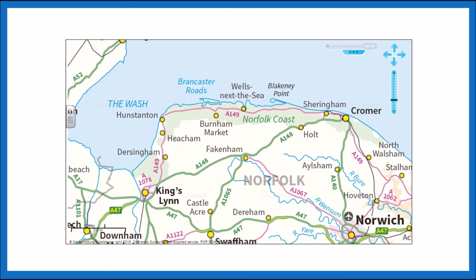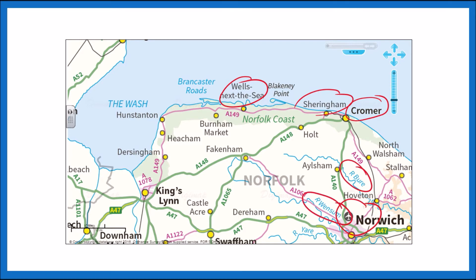This map here shows you a little more of the different towns and villages that are along the coastline, like Sheringham and Wells-next-the-Sea. We also have an airport a little while away and quite a few rivers as well, so again it's quite a natural landscape. If you look really closely, just about there, we can see a spit right there which is a landform within the North Norfolk coastline.